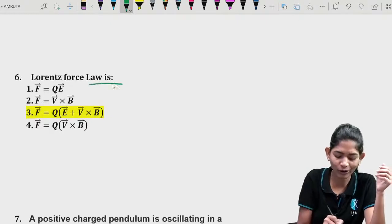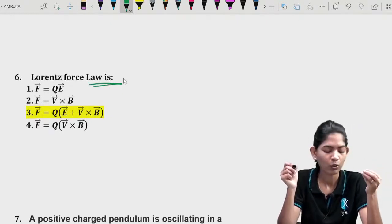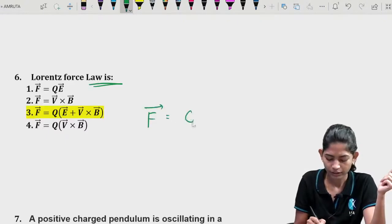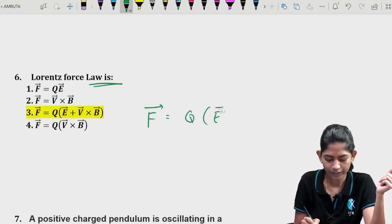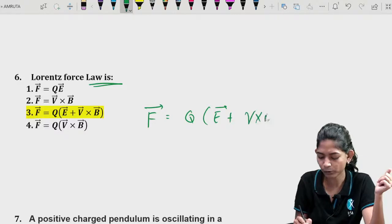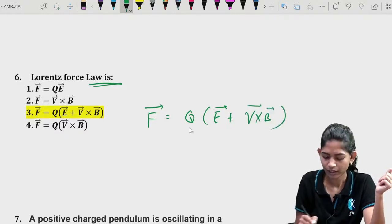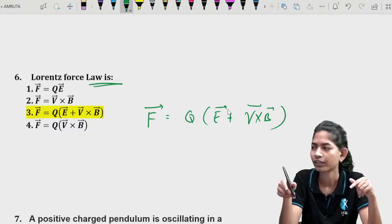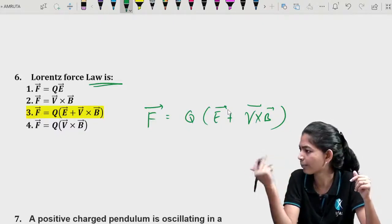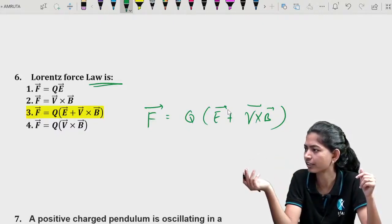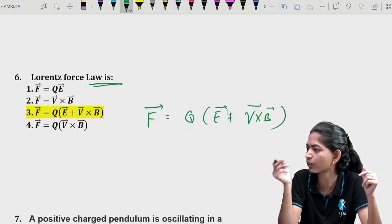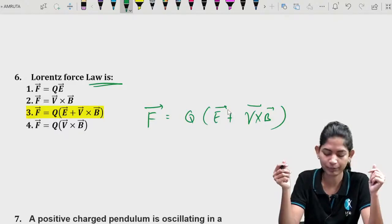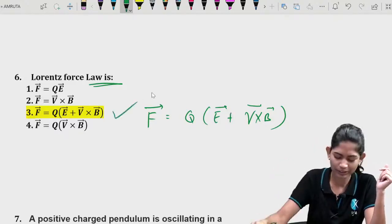Question 6: The Lorentz force law. This is a very basic question — the force is given by F = q(E + v × B). We studied this in Class 12 as the combined force due to electric field and magnetic field. The answer is option 3.